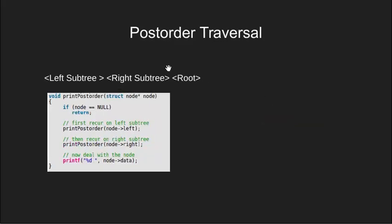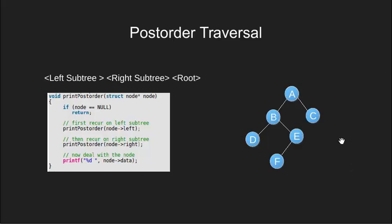Next we have the postorder traversal. In this we first traverse the left subtree, then we traverse the right subtree, and finally we traverse the root content. We have this algorithm for postorder traversal. We will use the same sample tree for demonstration. We start with root node A. Since it is not null, we go to its left subtree and come to B. Since B is also not null, we go to its left subtree and reach D. D is also not null — we check its left which is null, then its right which is again null. Now we can print this node and move back to B.